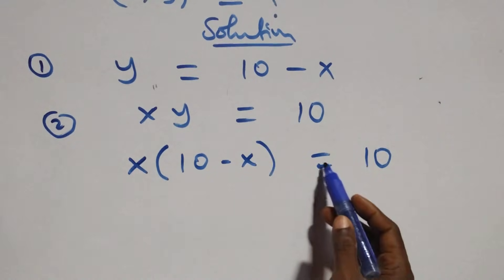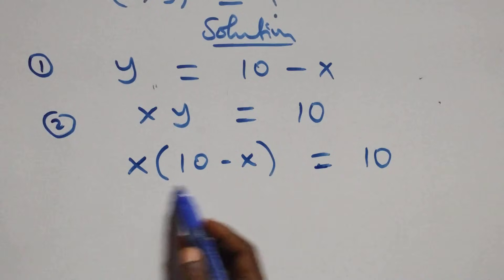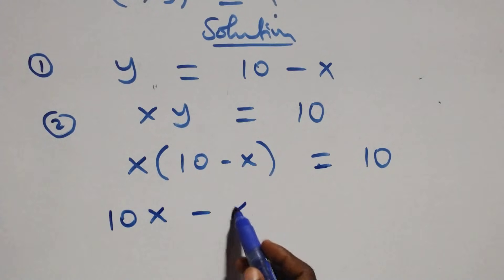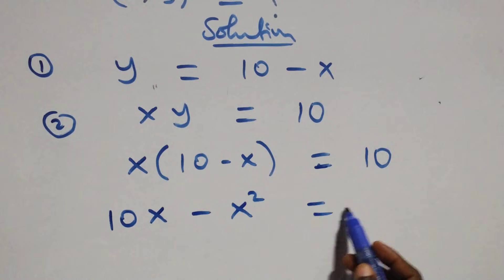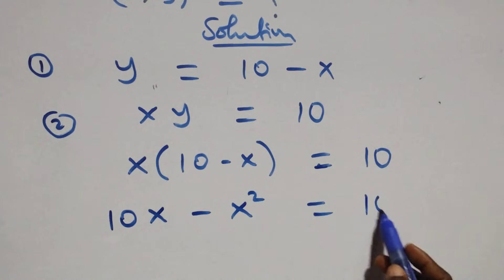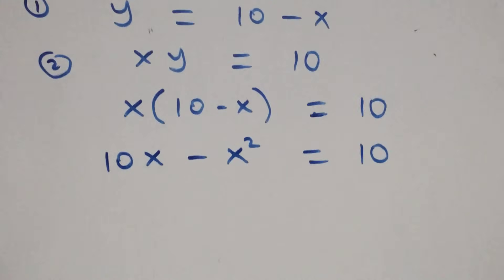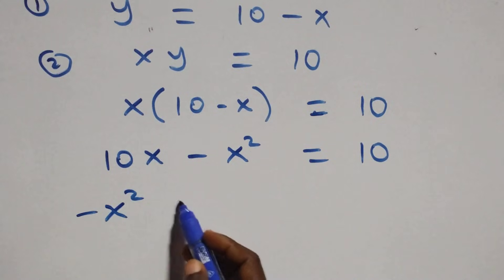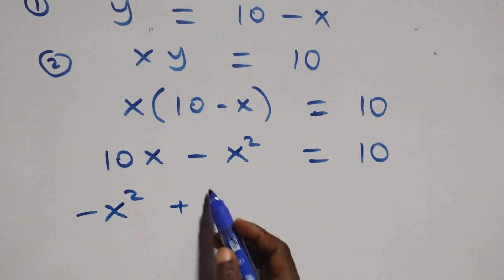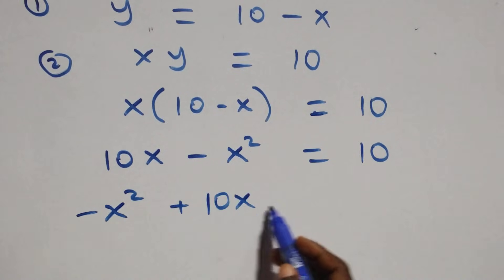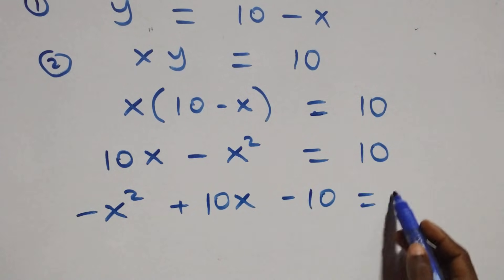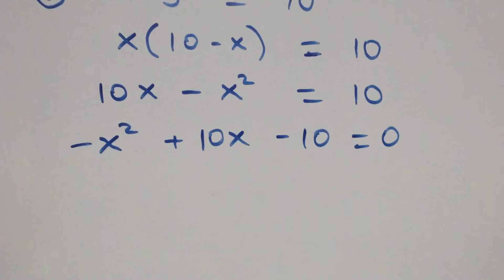At this next step, we expand the bracket and we have 10x minus x squared equals to 10. When we rearrange, we have minus x squared plus 10x, then 10 comes to this side and becomes minus 10, equals to 0.